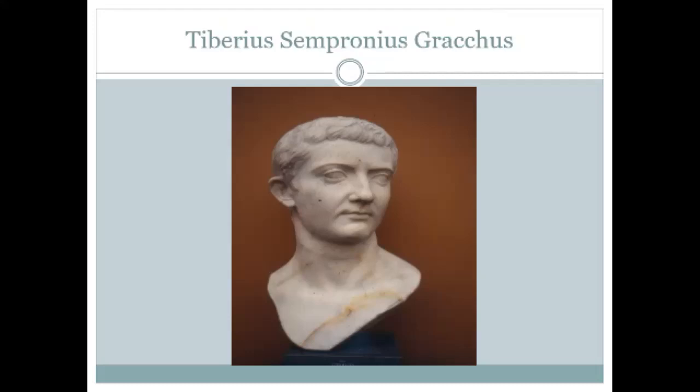Rome reverted to a form of monarchical government under the emperors. We can see right from the start that the Roman Revolution, unlike many modern concepts of revolutions, was somewhat different. It was not a planned event like the Russian Revolution or the French Revolution enacted for ideological reasons, nor was it restricted to a brief catastrophic period of activity.